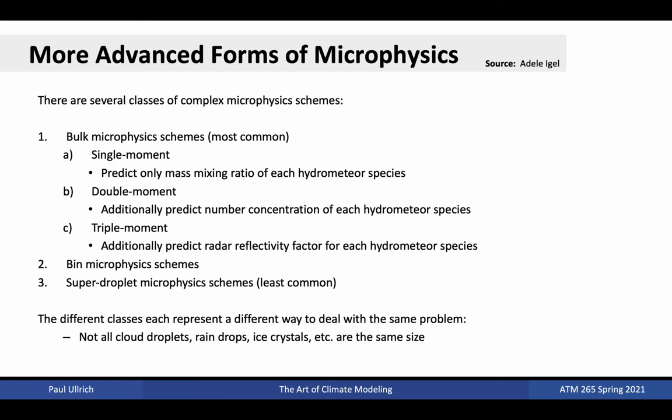Among bulk microphysics schemes, there are single-moment, double-moment, and triple-moment schemes. The single-moment schemes predict only the mass mixing ratio of each hydrometeor species, but have been shown to have severe deficiencies in correctly modeling cloud microphysics. Double-moment schemes additionally predict the number concentration of each hydrometeor species, while triple-moment schemes also predict radar reflectivity factor for each hydrometeor species. Nonetheless, all of these schemes basically represent a way of dealing with the same problem: not all cloud droplets, rain droplets, or ice crystals are the same size.